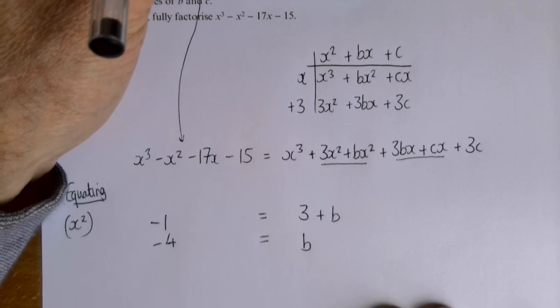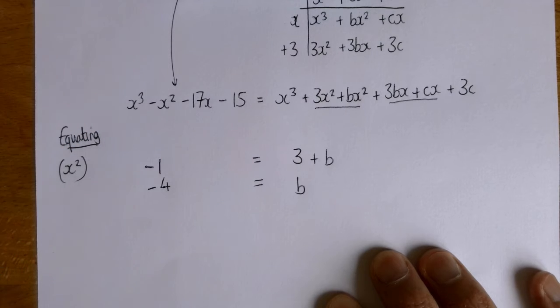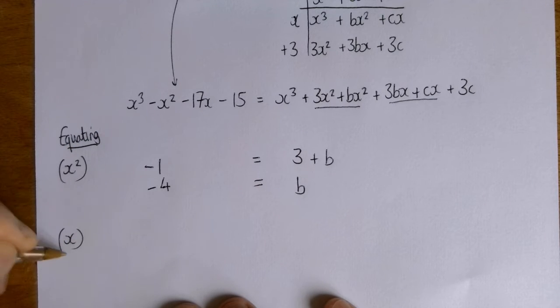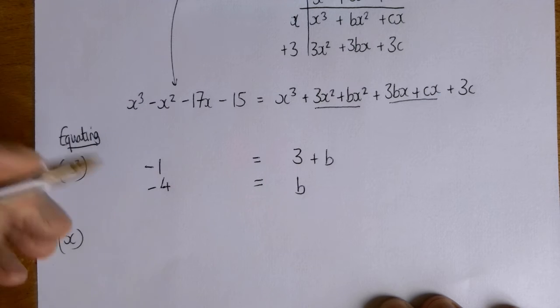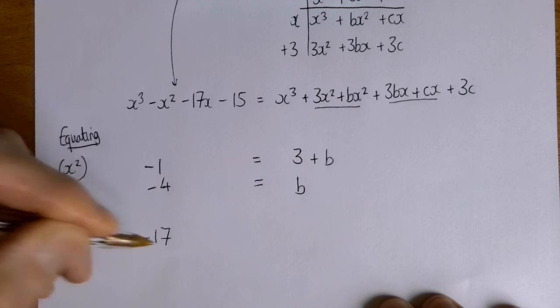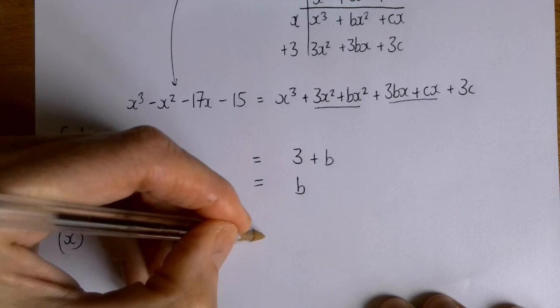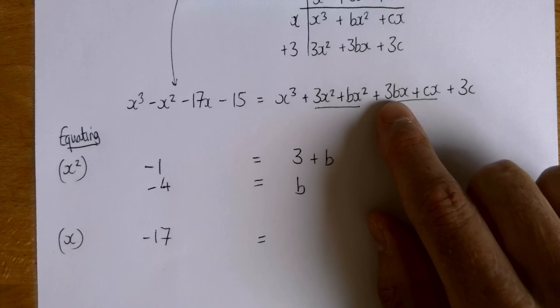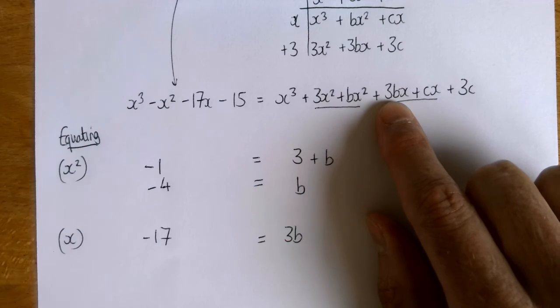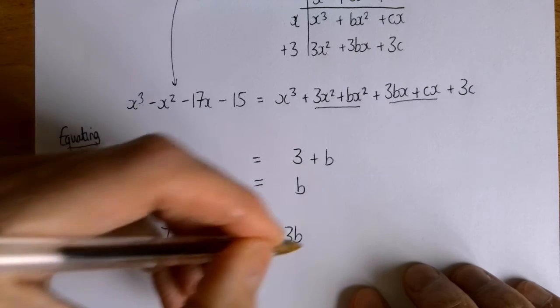So now let's look at the x's. On the left hand side, I've got minus 17 x's. On the right hand side, I've got three b x's and I've got c x's.